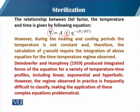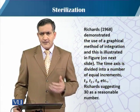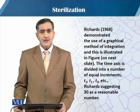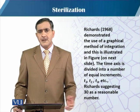As reported by Richards and Humphrey in 1959, they produced the integrated form of this equation for a variety of temperature-to-time profiles, including linear, exponential, and hyperbolic. However, the regime observed in practice is frequently difficult to classify, making application of these complex equations problematical. Richards in 1968 demonstrated the use of a graphical method to illustrate this relationship.